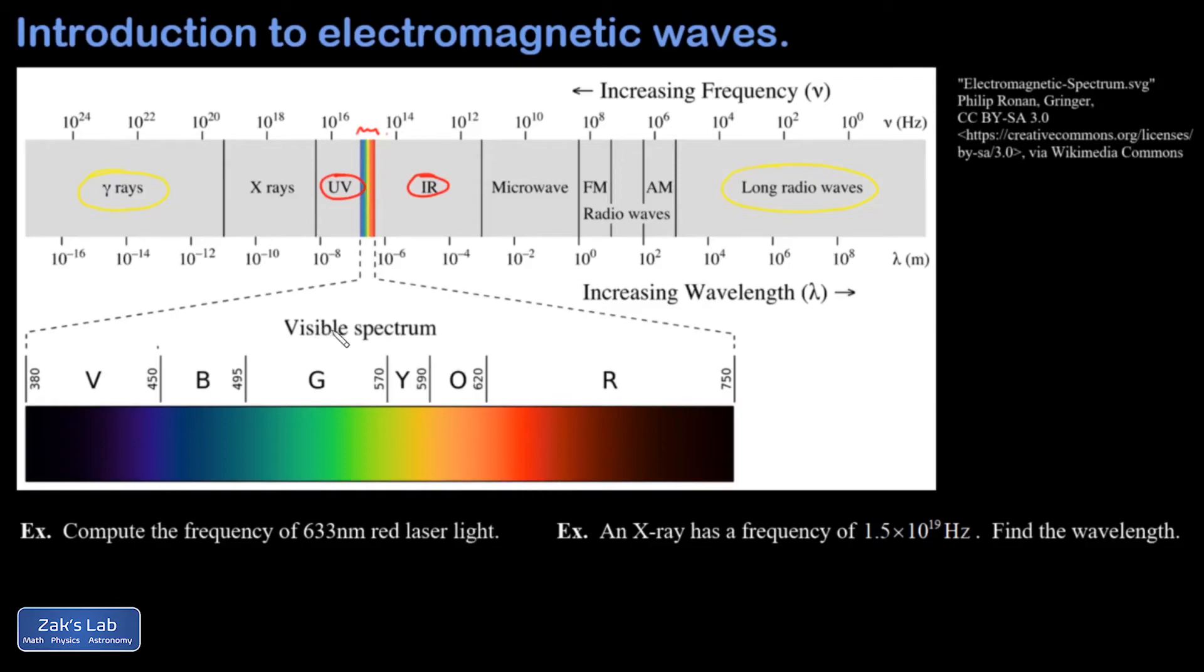So we see in a band that's basically 400 nanometers to 700 nanometers. In this blown-up view of the visible spectrum, it's extended a little all the way to a smallest wavelength of 380 and a biggest of 750.